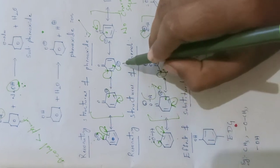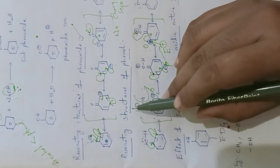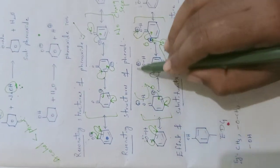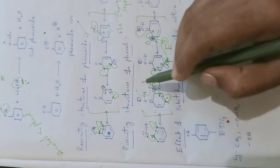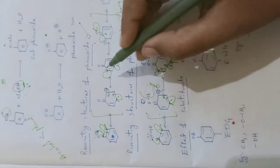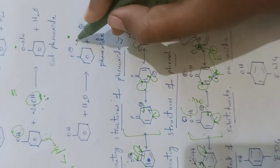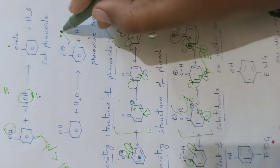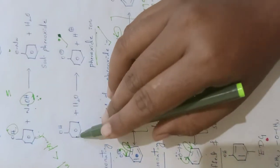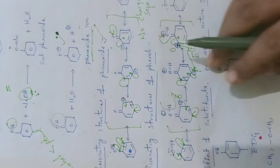In phenoxide resonating structures we see only one charge, but in phenol resonating structures we see two charges — a positive charge on oxygen and a negative charge revolving in the benzene ring. So phenol's resonating structures are less stable compared to phenoxide ion's resonating structures. Therefore, phenol always wants to exist in the form of phenoxide because this is highly stable. To exist as the highly stable phenoxide ion, phenol must lose hydrogen as H+, so we can say it contains acidic nature.